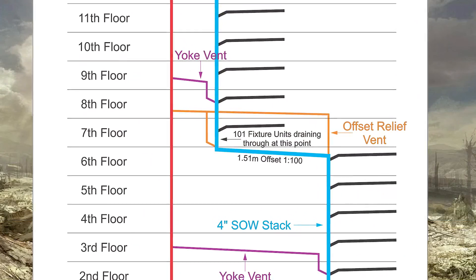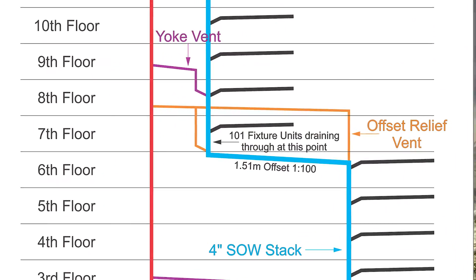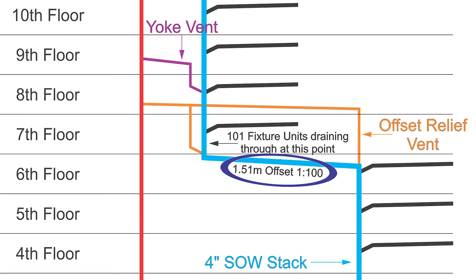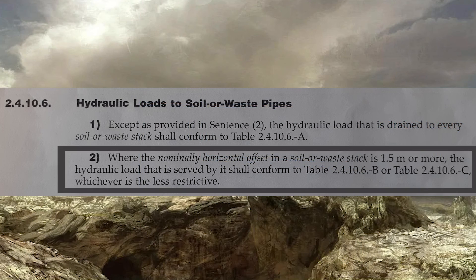There is also one more requirement for the actual offset that we need to consider: clause 24106 part 2. Where the nominally horizontal offset in a soil away stack is 1.5 meters or more, the hydraulic load that is served by it shall conform to table 24106B or table 24106C, whichever is the less restrictive.